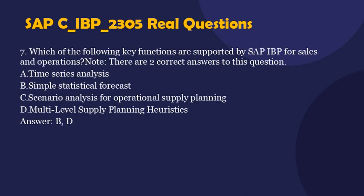Question 7. Which of the following key functions are supported by SAP IBP for sales and operations? Note, there are two correct answers to this question. A. Time series analysis. B. Simple statistical forecast. C. Scenario analysis for operational supply planning. D. Multi-level supply planning heuristics. Answer: B, D.